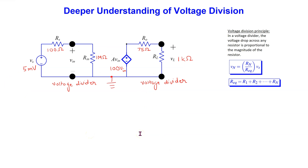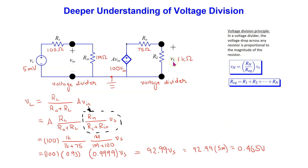Finally, we consider an example with a dependent voltage source. In this circuit, R0 and RL form a voltage divider for the dependent voltage source. Also, RS and RIN form a voltage divider for the input voltage source Vs. Thus, the output voltage VL can be calculated using two voltage dividers as shown. Please pause the video now if you wish to study this in more detail.